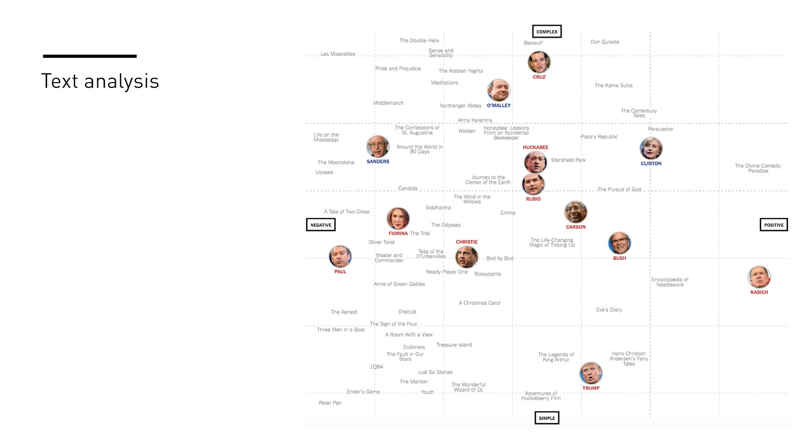Just to run through some examples of where R played a larger role: we used it for text analysis. This looked at the debate performances of different Republican primary candidates and compared them using semantic analysis to compare the way that they spoke with works of literature — finding that Ted Cruz speaks kind of like Beowulf, and Donald Trump speaks kind of like the Legends of King Arthur.